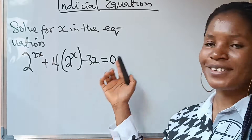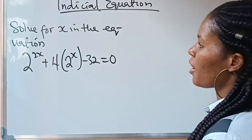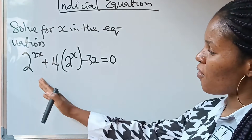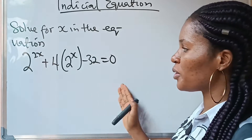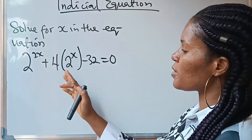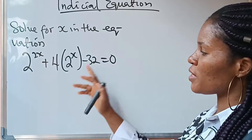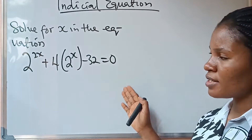Let's solve this on the board. Welcome to my channel. We are asked to solve for x in this equation: 2 raised to the power of 2x, plus 4 bracket 2 raised to the power of x, minus 32.